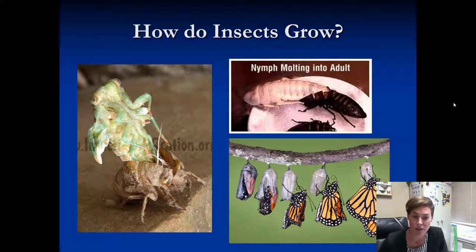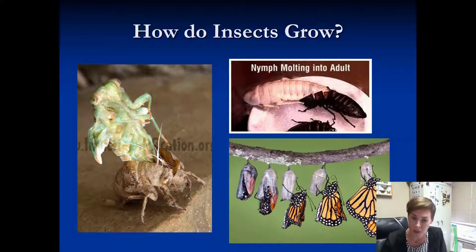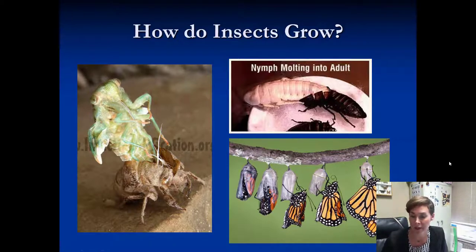A cicada coming out — you notice those little shells on the sides of your house during summertime. There's a hissing cockroach that's molting. When it comes out, it's still covered in a new exoskeleton, but see how white it is? It's really, really soft so that it's allowed to pump up full of air and get a little bit larger. And then this monarch butterfly is molting out of that pupa case, coming out as the adult that we recognize as a butterfly.